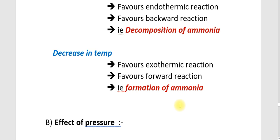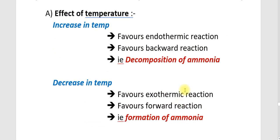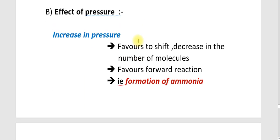Otherwise, decomposition of ammonia will take place. Next is the effect of pressure. In this reaction, the number of moles of the reactants is greater — that is 4 moles — while the number of moles of the product is only 2. An increase in pressure favours the side with fewer molecules. Here, the decrease in number of moles is on the product side — 2NH3 — so it favours the forward reaction, that is the formation of ammonia.